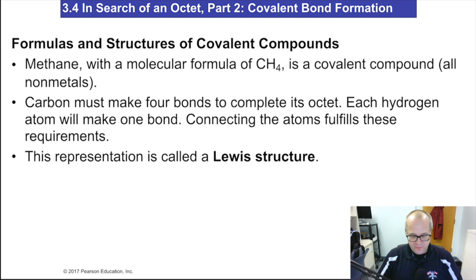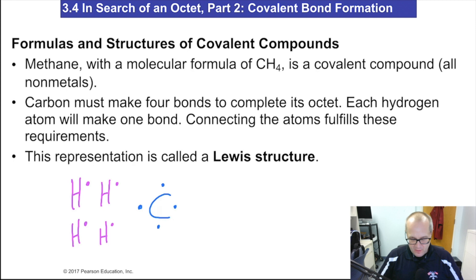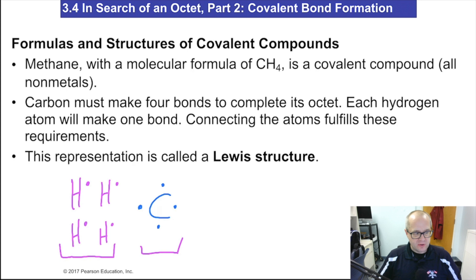Formulas and structures of covalent compounds. Methane, with the formula CH4, is a covalent compound of all nonmetals. Carbon makes four bonds, hydrogen makes one bond. We know that hydrogen wants to make one bond and carbon wants to make four bonds. It's kind of nice that we have four hydrogens, each with a single electron, and an atom that wants to make four bonds — that makes it kind of easy. Watch this.